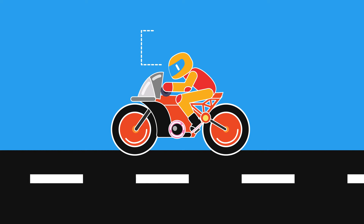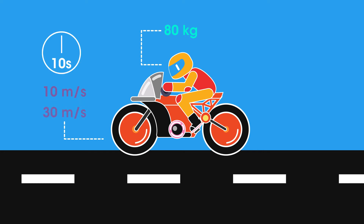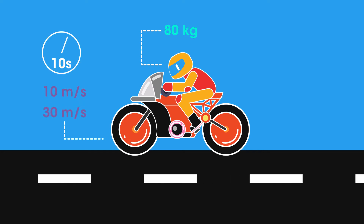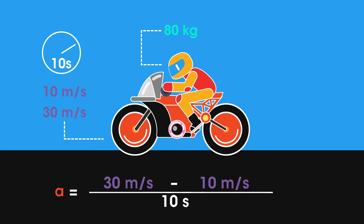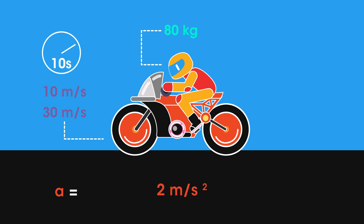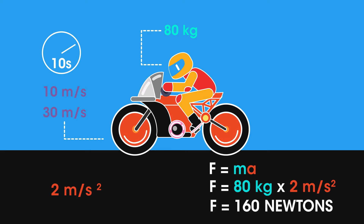A motorbike of mass 80 kilograms increased in speed from 10 meters per second to 30 meters per second in 10 seconds. What size force acted on the bike? First we must calculate the acceleration using the formula, then we can calculate the force using F equals mA. Force is measured in Newtons, so the answer equals 160 Newtons.